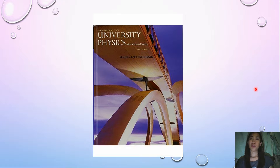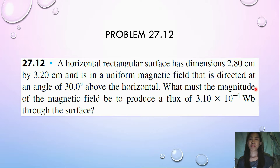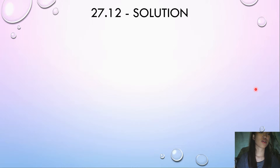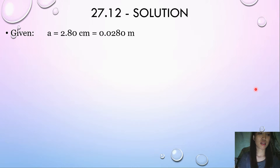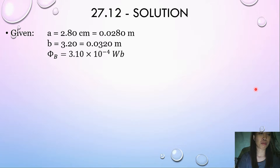We're here again to solve another problem from University Physics. We will be talking about problem 27.12. A horizontal rectangular surface has dimensions 2.80 centimeters by 3.20 centimeters, and is in a uniform magnetic field that is directed at an angle of 30.0 degrees above the horizontal. What must the magnitude of the magnetic field be to produce a flux of 3.10 times 10 to the negative 4 Weber through the surface?